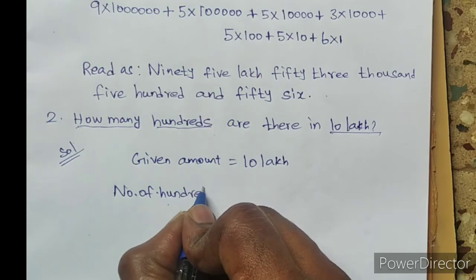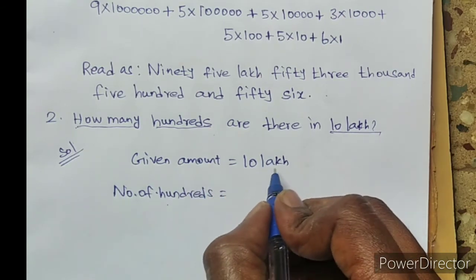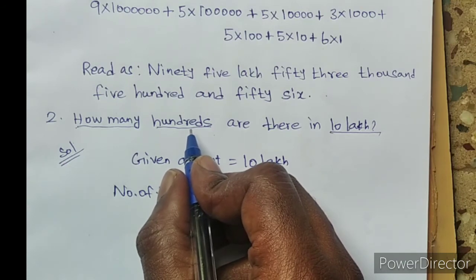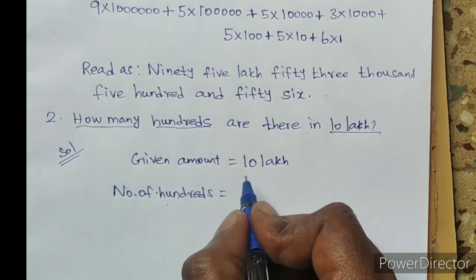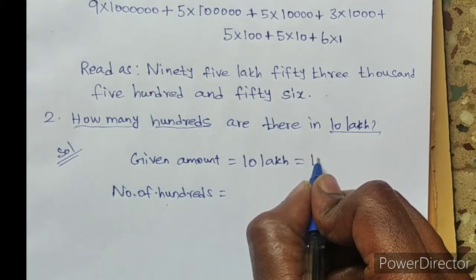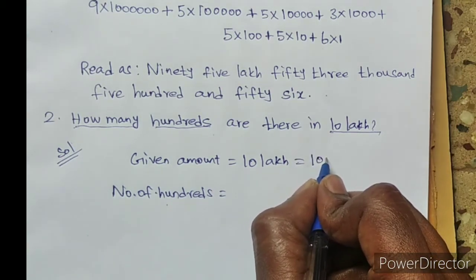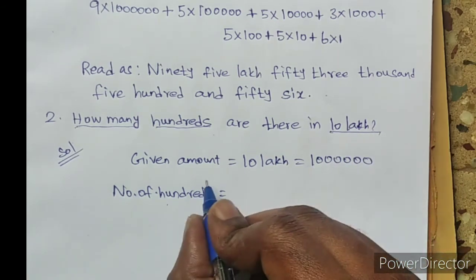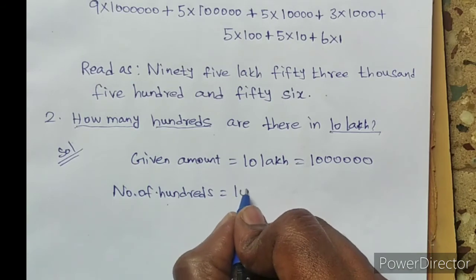Number of hundreds equals amount divided by 100. How many zeros in hundred? Two zeros. Amount divided by hundred. So ten lakh has six zeros: 1, 2, 3, 4, 5, 6. That is 10 lakh.